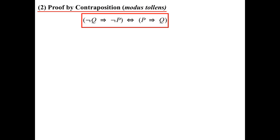That brings me to proof by contraposition. This is the one we haven't seen before. It's known as modus tollens, and it's basically the idea that contraposition is where we go and prove the contrapositive — because sometimes that's easier.